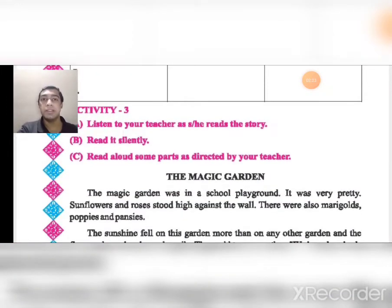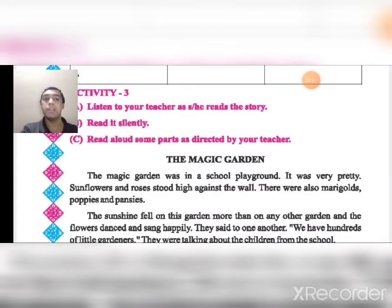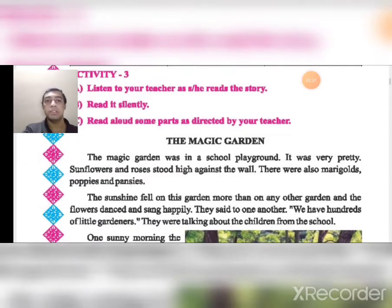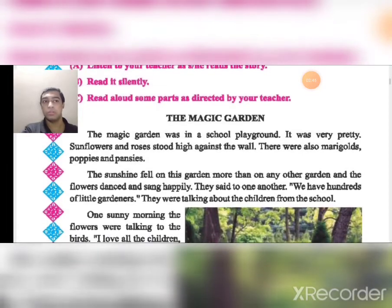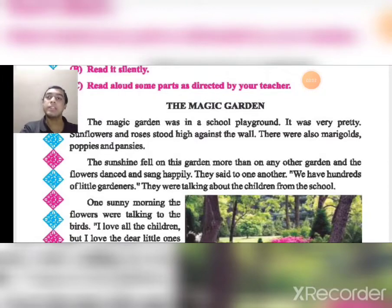Activity 3: Listen to your teacher as he or she reads the story, read it silently, then read aloud some parts as directed. I will be reading the story now. The Magic Garden. The magic garden was in a school playground. It was very pretty. Sunflowers and roses stood high against the wall.